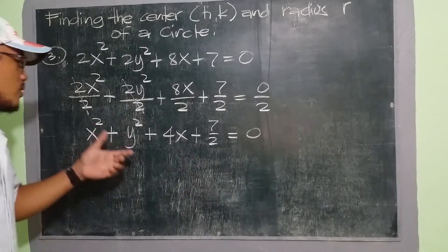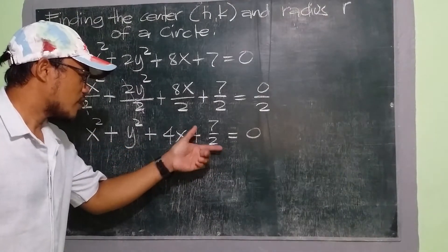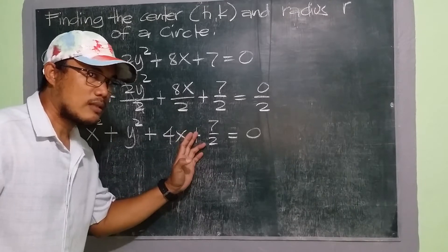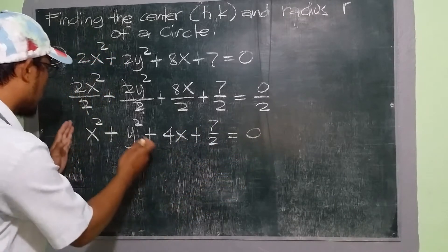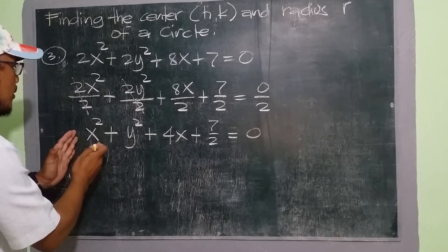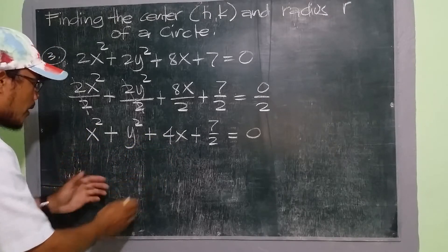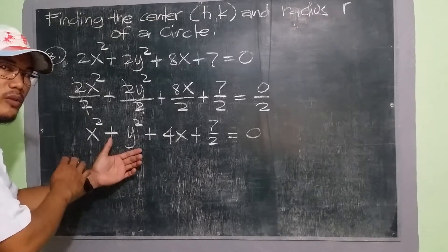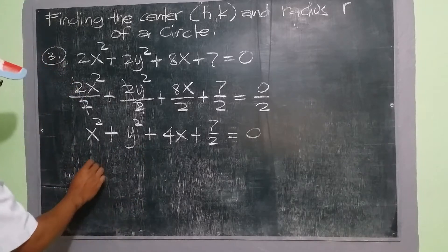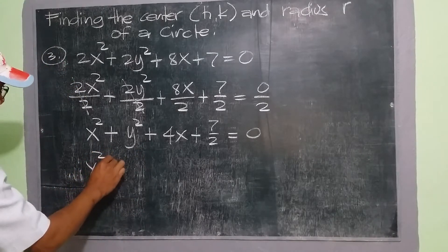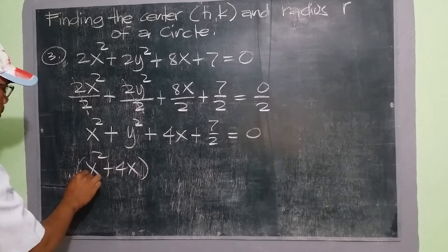Now next is we transpose 7 over 2. We put 7 over 2 on the other side, and we group all x by one group, and we group y squared on another group. We have x squared plus 4x, so this will be one group.